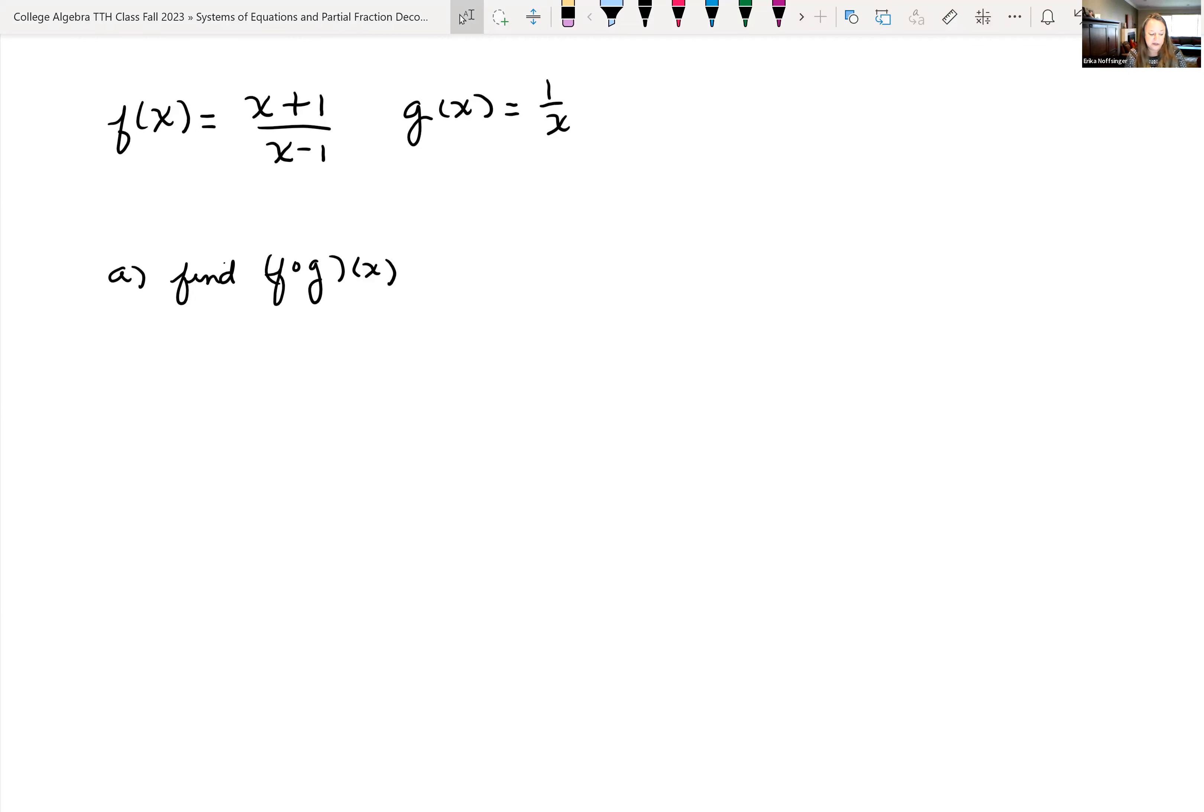First thing we want to do is find the composition of those two functions, f of g of x. So f with that little circle in between g and then in parentheses x, that could be rewritten if it helps you as f parentheses g of x.